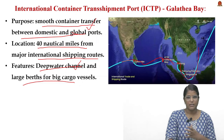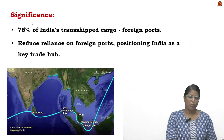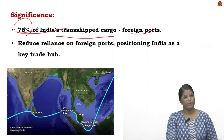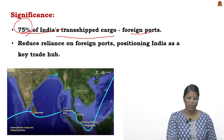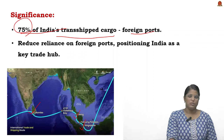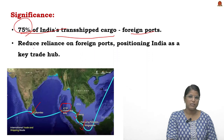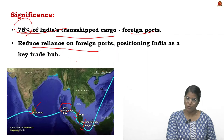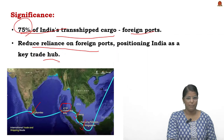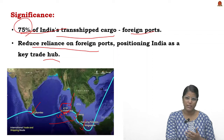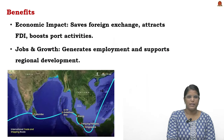India's 75% of transshipment cargo actually happens in foreign ports — Colombo, Klang, and Singapore. When this ICTP comes into operation, India will not rely on these foreign ports. This project reduces reliance on foreign ports and positions India as a key trade hub. It will also favor other countries' needs since it is just 40 nautical miles from an international sea route.